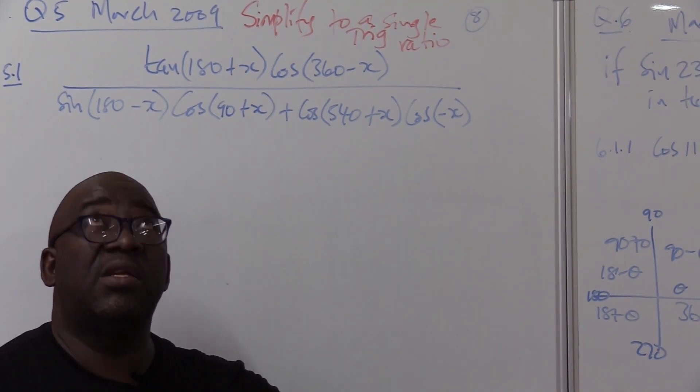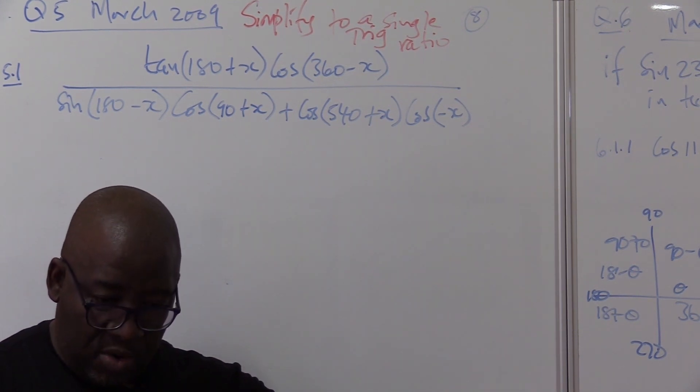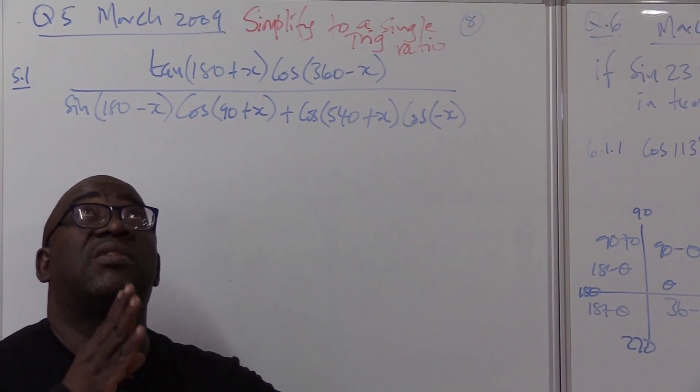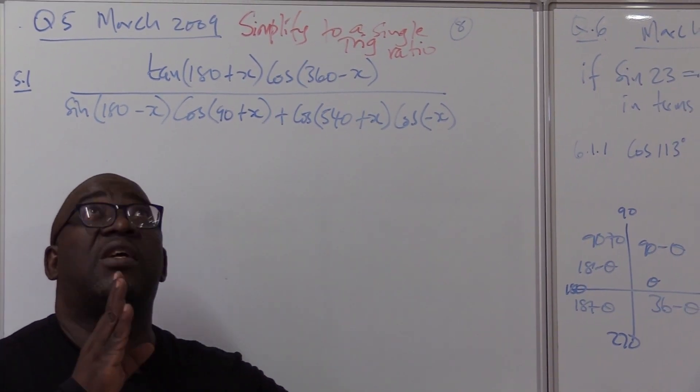Whenever I ask you a question, go to that quadrant, go to that angle. Where is 90? On top. Where is 27? Down. Does 90 and 270 change the ratio?